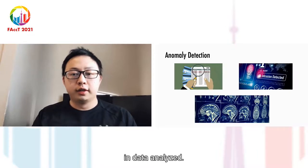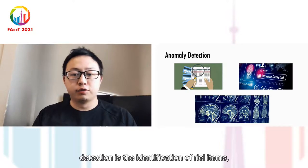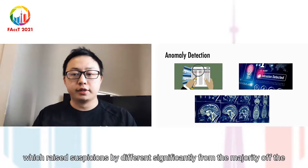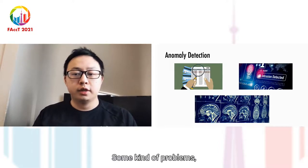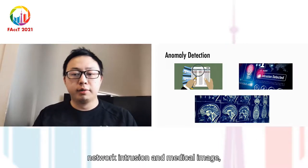In data analysis, anomaly detection is the identification of rare items, events, or observations which raise suspicions by differing significantly from the majority of the data. Typically, the anomalous items translate to some kind of problems, such as fraud detection, network intrusion, and medical image analysis.